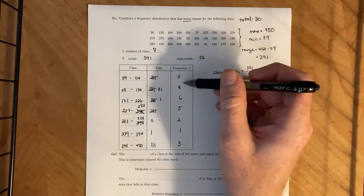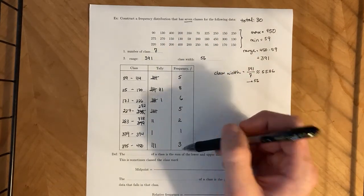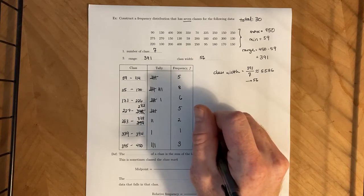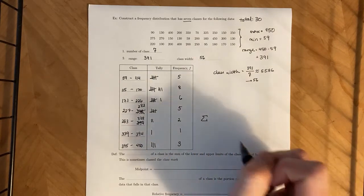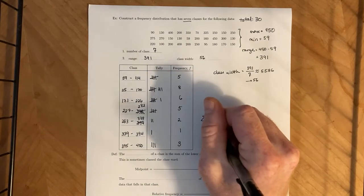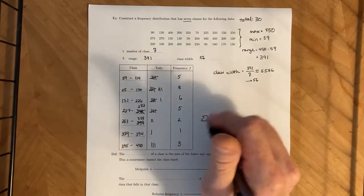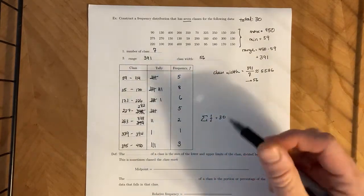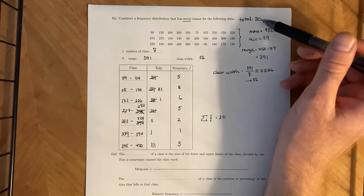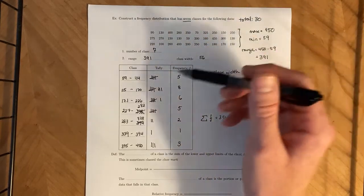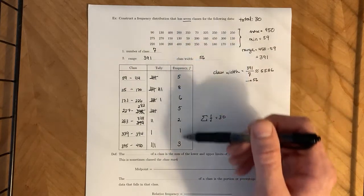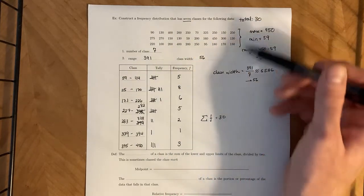Now, if we add up all these numbers here, right, and to represent adding up in math, we use the capital Greek letter sigma of F. So adding all those up, you should be getting 30. That's a good way to double check. Go in here, manually count it, figure out how many you're supposed to have. Once you're done with the tallies and you know the frequencies, add the frequencies up to make sure that you counted everything.